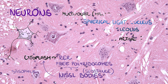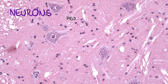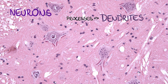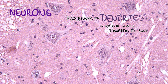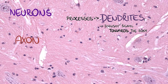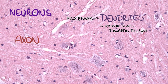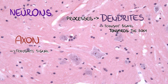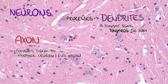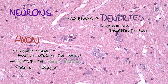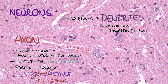We can also differentiate processes of neurons such as dendrites, which transmit signal towards the body, and one axon that transmits signal to another neuron or to an end organ and goes to the white matter. The axon doesn't branch, doesn't contain Nissl substance — that's why it's eosinophilic — and is heading to the white matter.